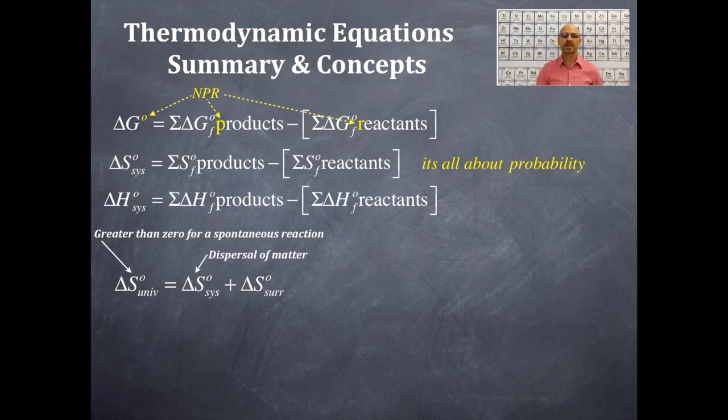The delta S naught for the system, which is the products minus reactions that we just covered, is the dispersal of matter. Now, the other delta S naught for the surroundings is the dispersal of energy, that's NRG. I'll discuss that in just a second.